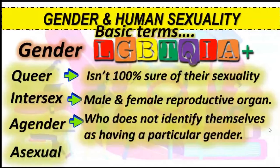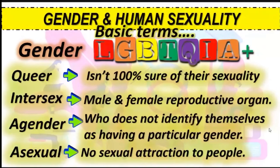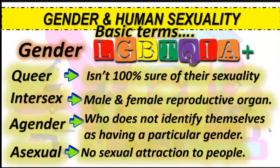When it comes to asexual, it means no sexual attraction to people — a person who is not emotionally, physically, or sexually attracted to others. Another A is the ally community — an organization with the main objective of uniting other genders. The plus symbol represents other gender preferences not mentioned in LGBTQIA.